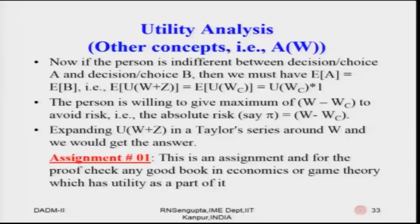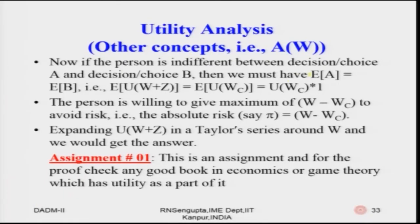If the person is indifferent between the decisions — choice A and choice B — then obviously the expected value for A and the expected value of B would be equal. A was W plus Z and B was W_C. If you put them together, the actual formula comes out with A on the left-hand side and B on the right-hand side, which I am highlighting now.